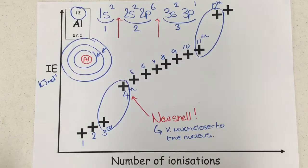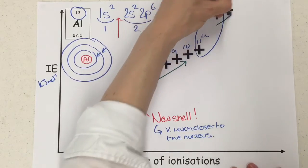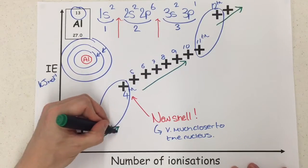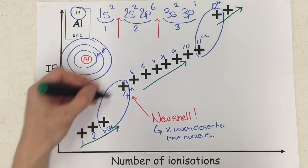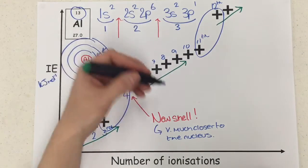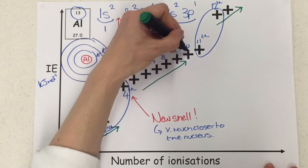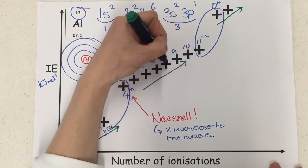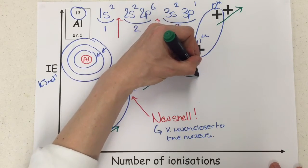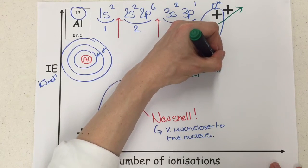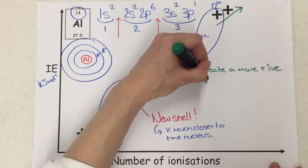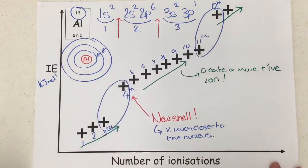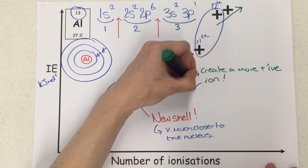I suppose the other thing we should mention just before we move away from this is why is there a gradual climb in each of the shells, even though we're not transitioning between a shell for any of these climbs? Well the reason for this is, if we look at these for instance, each time you remove an electron, you create a more positive ion.